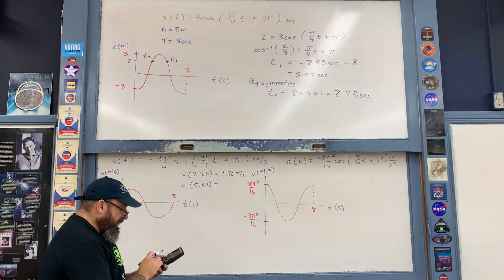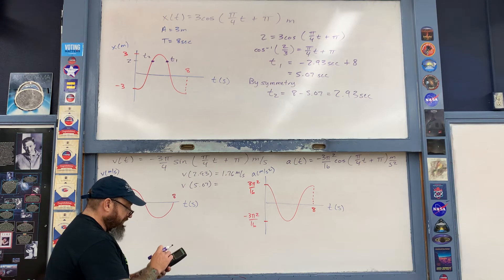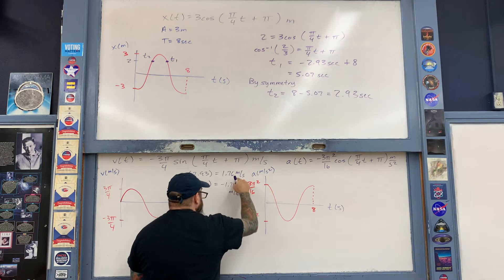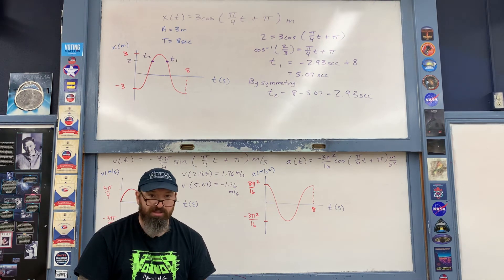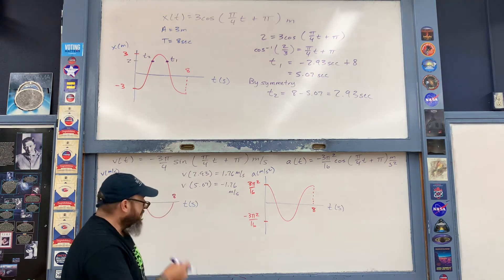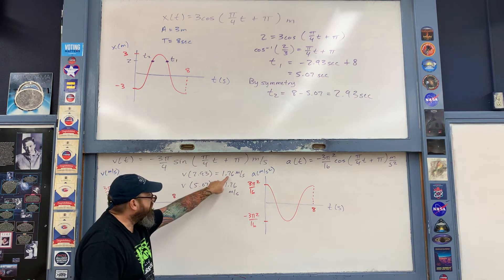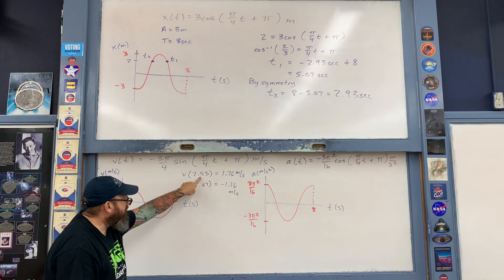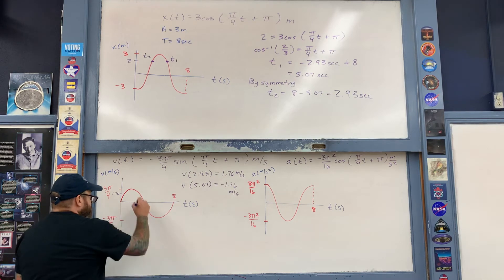You should get the same magnitude to several decimal places for these two values. If you don't, you did something incorrectly with the math earlier in the example — so this is another way to check yourself. Now let's mark these points on the velocity graph. A velocity of 1.76 meters per second is up here somewhere. The question then becomes: where is 2.93 seconds — is it here on the left or here on the right? It's here on the right.